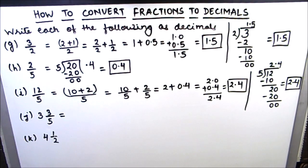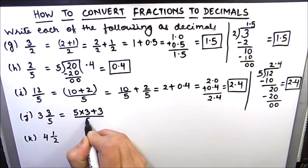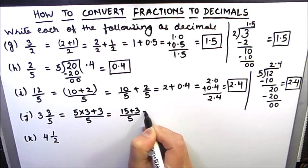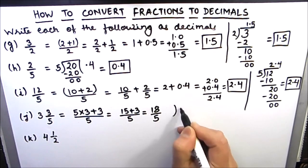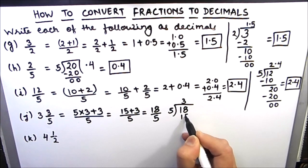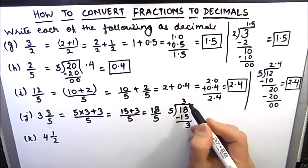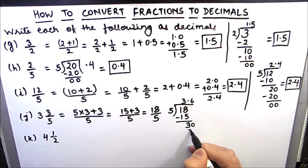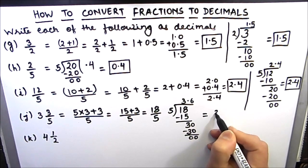We need to convert this mixed fraction into an improper fraction. This will be 5 times 3 plus 3 divided by 5, which is equal to 15 plus 3 divided by 5, which is equal to 18 divided by 5. Now we can divide 18 by 5. 5 times 3 is 15, and we are getting 3 as remainder. Now 3 cannot go into 5, so we will put a decimal point and a 0. 5 times 6 is 30, so 30 minus 30 is 0. So our answer is 3.6.